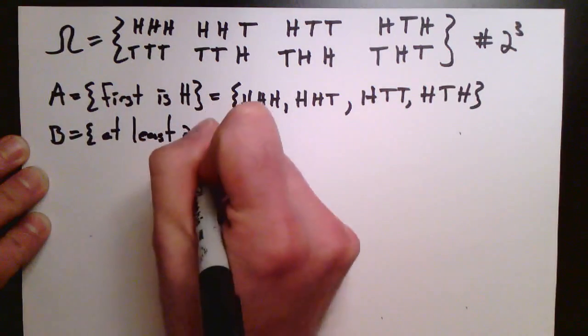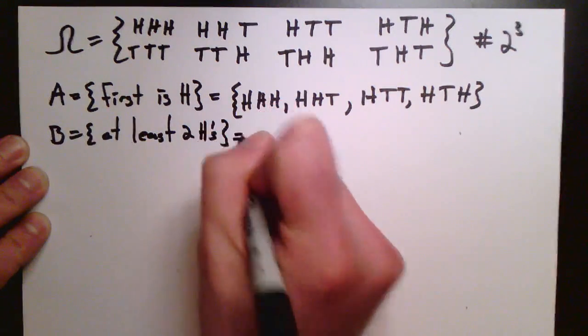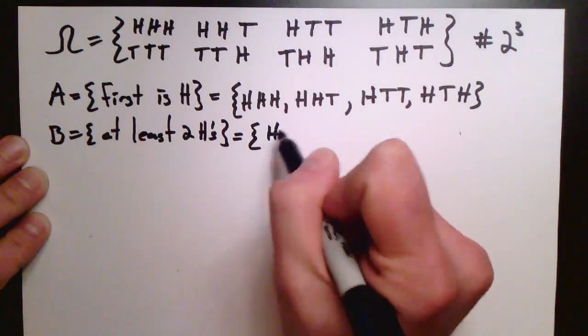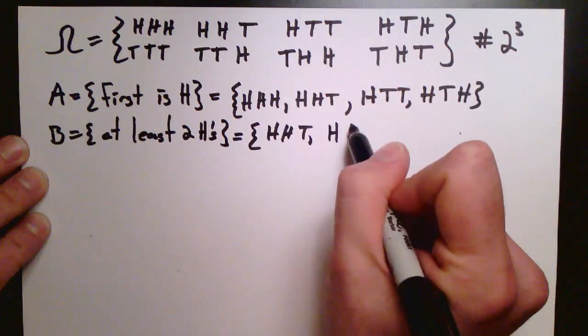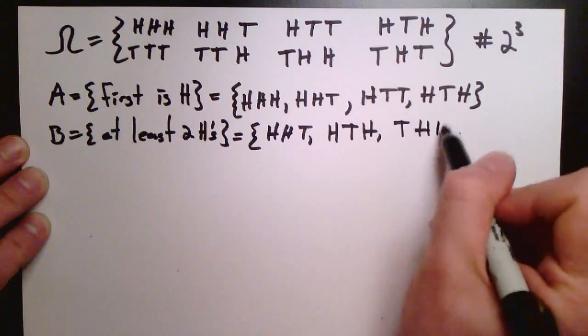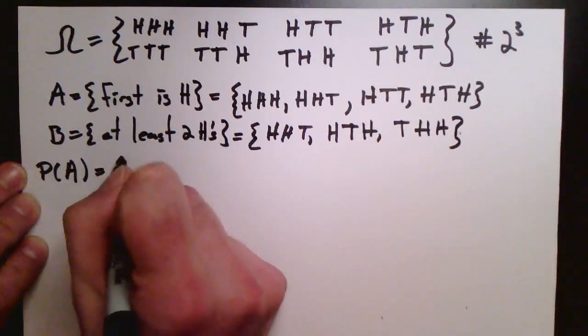And a second event, which is that at least two of the coins flipped are heads, not mattering about the order. So that would be head, head, head, tail, head, tail, head, tail, head, head. So those are all the possibilities.